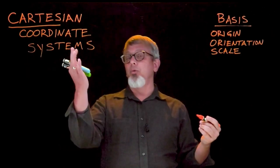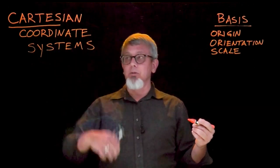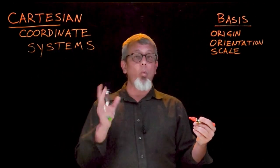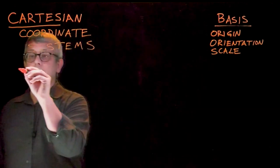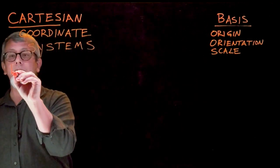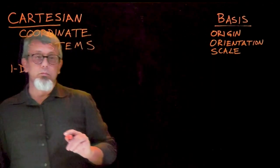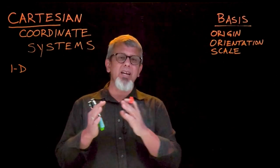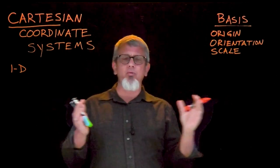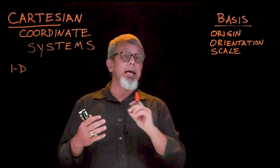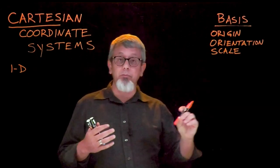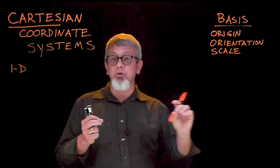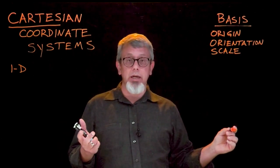So we're going to walk through three different levels of the Cartesian coordinate systems and we're going to start in one dimension. In a single dimension, we're basically interested in something that only has one direction associated — maybe it's position of places along a river, or lengths of string, or something along those lines.